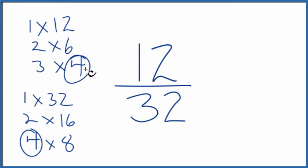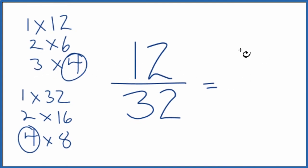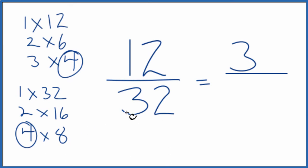So 12 divided by 4 gives us 3, and then 32 divided by 4 gives us 8. And we end up with 12 32nds equals 3 8ths, and we can't simplify this fraction any further.